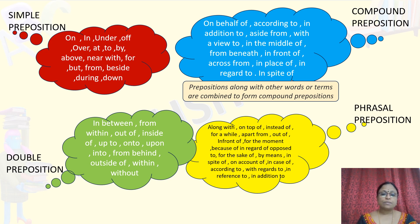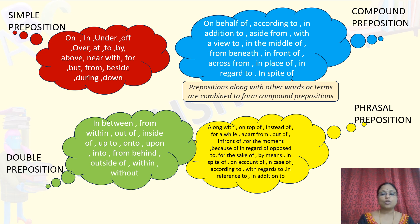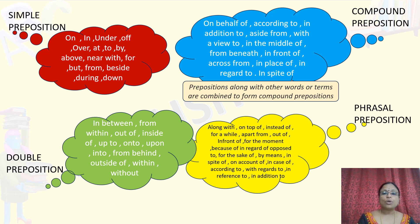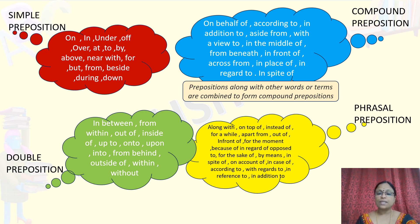Double preposition. In this, two simple prepositions merge to form one that links the nouns or pronouns to the remaining words in a phrase. For example: in between, from within, out of, up to, from behind and so on.